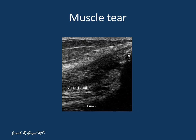Here is a patient status post trauma and a fall with a tear in the vastus lateralis muscle. You can see the discontinuity of the muscle fibers and a hypoechoic gap in the muscle fibers — the so-called bell and clapper sign — indicative of a muscle tear.